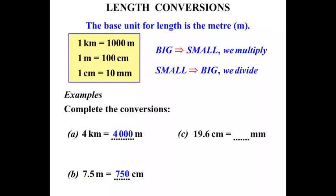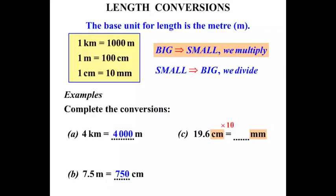The next one: 19.6 centimeters equals how many millimeters? Centimeters and millimeters — there are 10 millimeters in a centimeter, so we're dealing with a factor of 10. We're changing from centimeters to millimeters, going from big to small, so we multiply by 10. And 19.6 times 10 is 196.